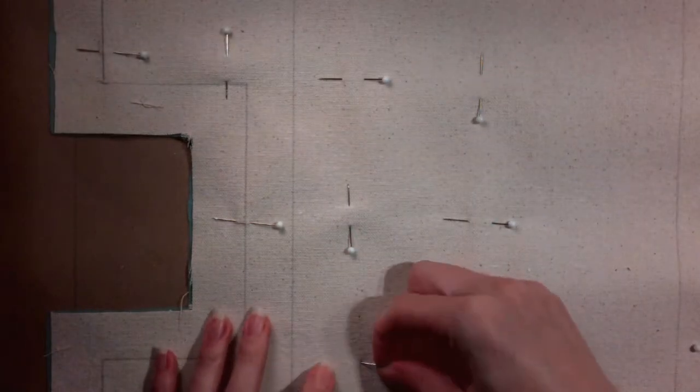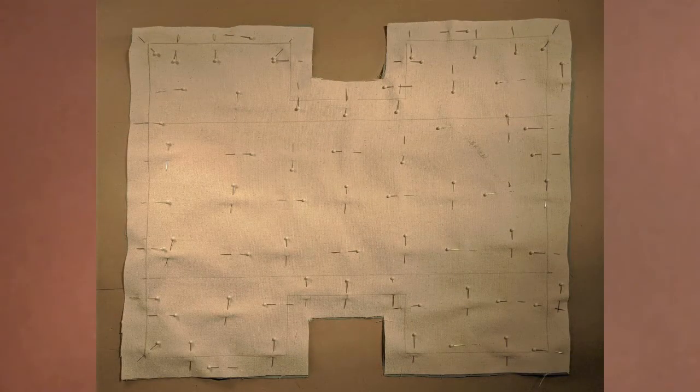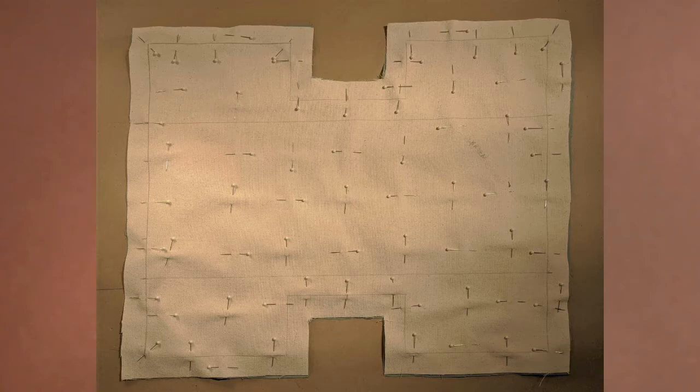After creating a grid of pins across the entire piece, add a few additional pins along the stitch lines. Now the strap placement lines should be thread traced.